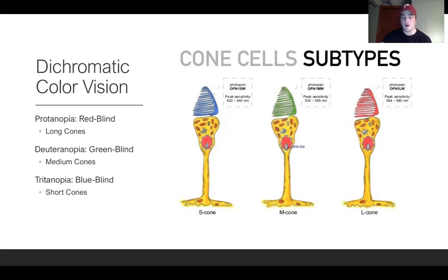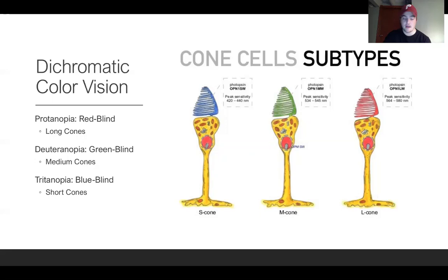People who have protanopia have red color blindness, so they can't see the color red, which means either their long cones are not there or the existing long cones were mutated and do not function properly due to the gene mutation. People who have deuteranopia are green color blind, meaning they can't really perceive the color green. And people who have tritanopia have blue color blindness.